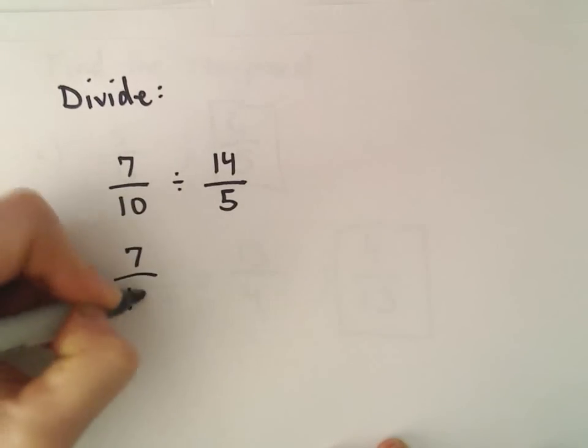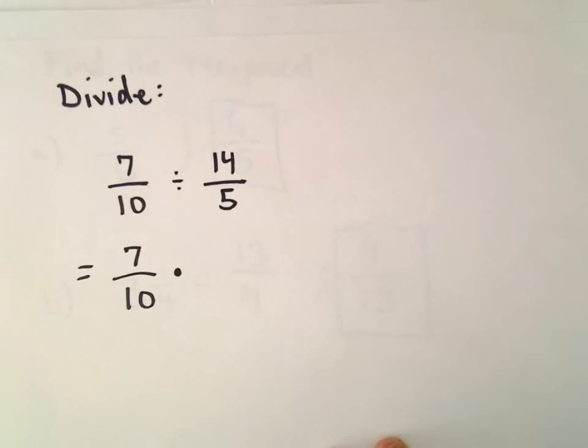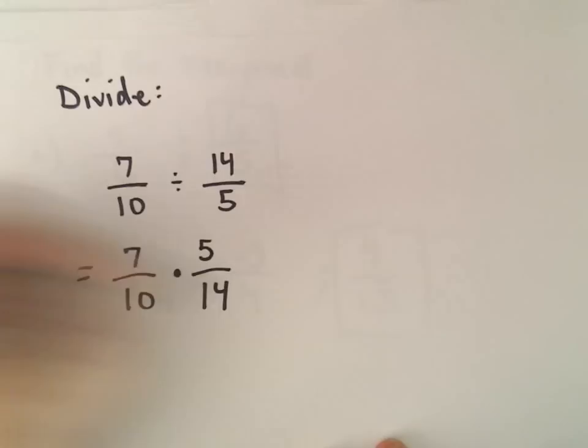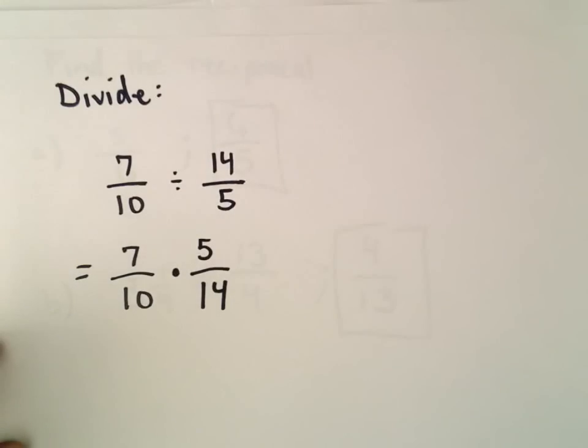I'm going to leave the first one alone. My division becomes multiplication. And now I'm just going to flip my fraction upside down. I'm going to multiply by the reciprocal.